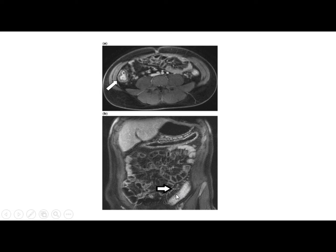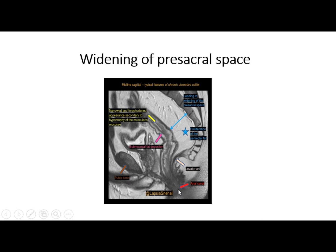MRI also shows enhancement of the submucosa. Whenever there is fat deposition in the perirectal area, this space becomes widened — widening of the presacral space is a feature of ulcerative colitis. There is also narrowing of the rectum due to hypertrophy of the muscular layer and proliferation of the perirectal fat. That concludes the presentation.